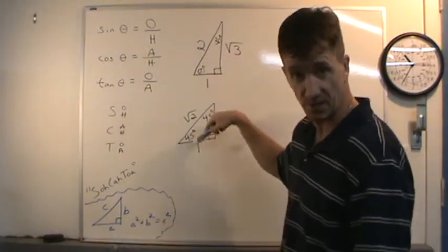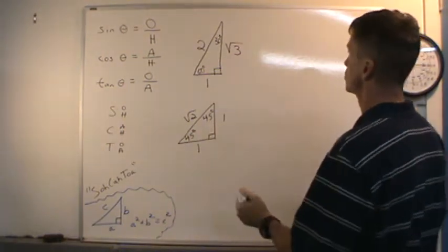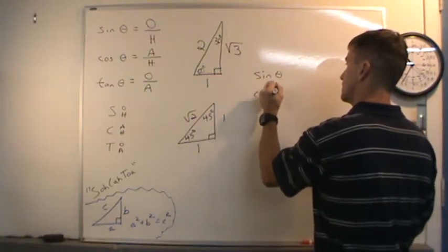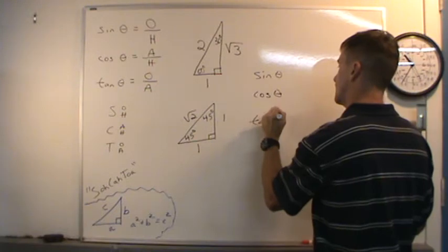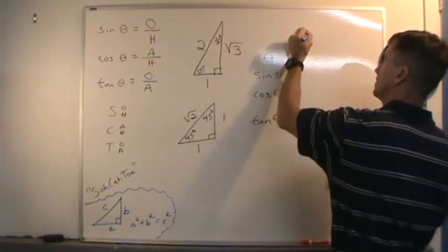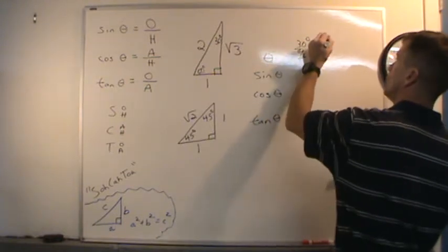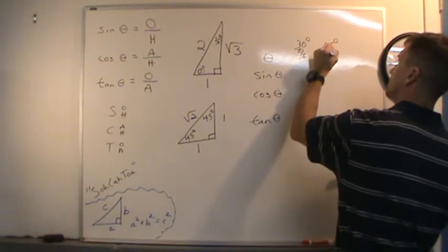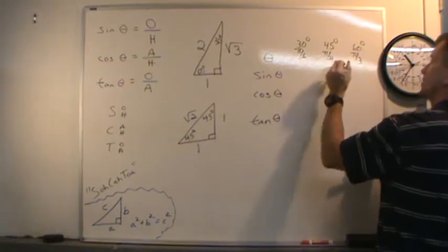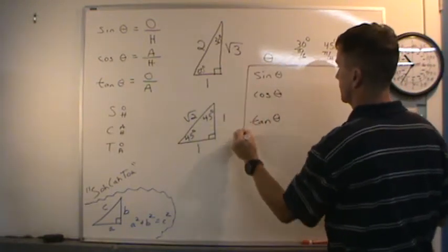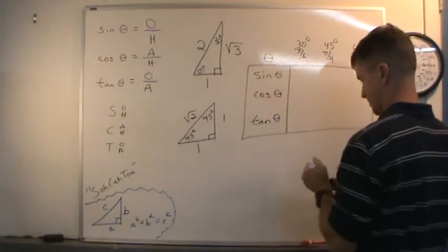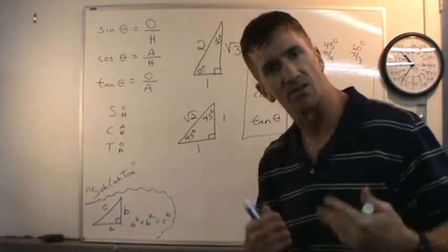It's very important to remember the special right triangles. We're going to find sine, cosine, and tangent for all these angles and set up a table. We've got a 30-degree angle, which is also pi over 6; a 45-degree angle, which is also pi over 4; and a 60-degree angle, which is also pi over 3. Let's start evaluating.